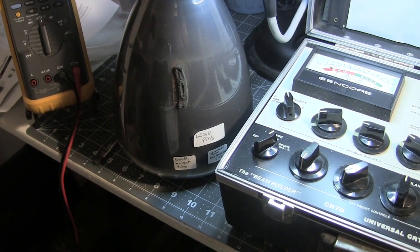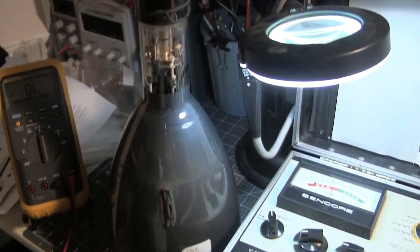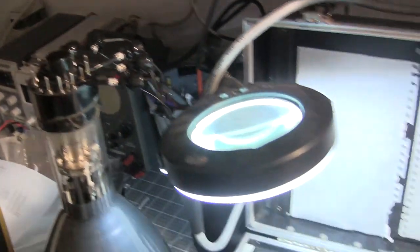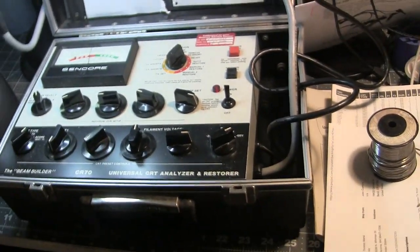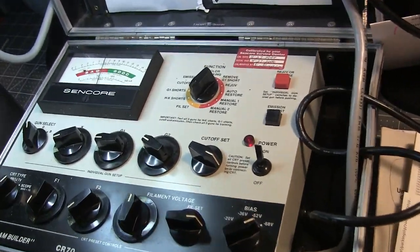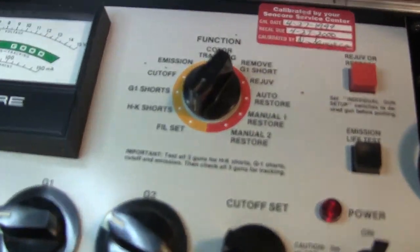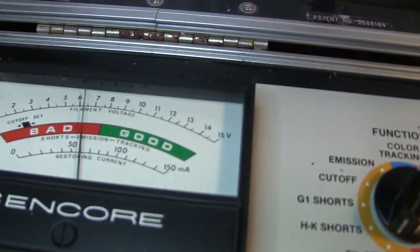Here's your picture tube, John, connected to the universal adapter, which is connected to the CR70, just like my other spare tube. I've got the filament set for 6.3 volts.